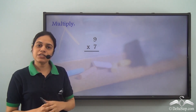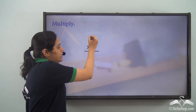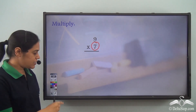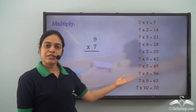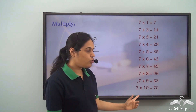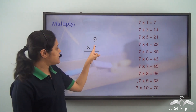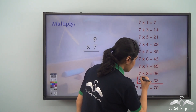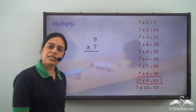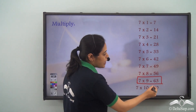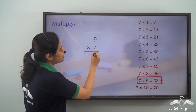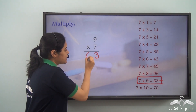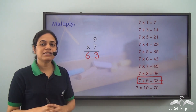Now what is 9 into 7 — 9 multiplied by 7? For this I need to check the table of 7. This is the table of 7. Now which row do I need to look at? 7 into 9 — this is 7 into 9, which is 63. So 7 into 9 is equal to 63. I write 3 below the ones place digits and 6 before 3, giving me 63.